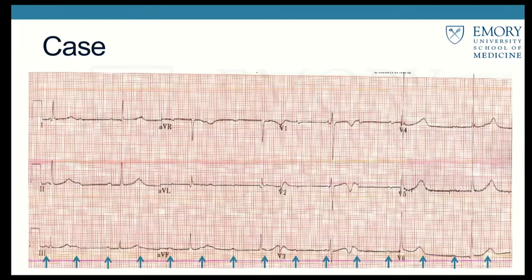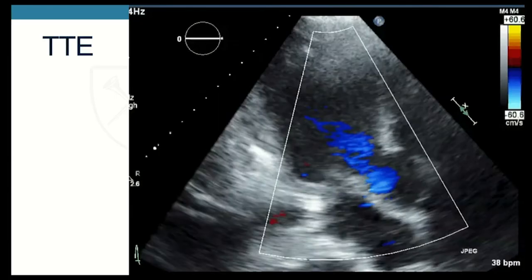This is his EKG. The arrows trace out his P waves, and he's in complete heart block with a narrow junctional escape rhythm. We decided to admit him given this complete heart block that he was not previously aware of. We thought maybe he had some conduction disease, so we'd watch him on telemetry overnight and just get an echo.